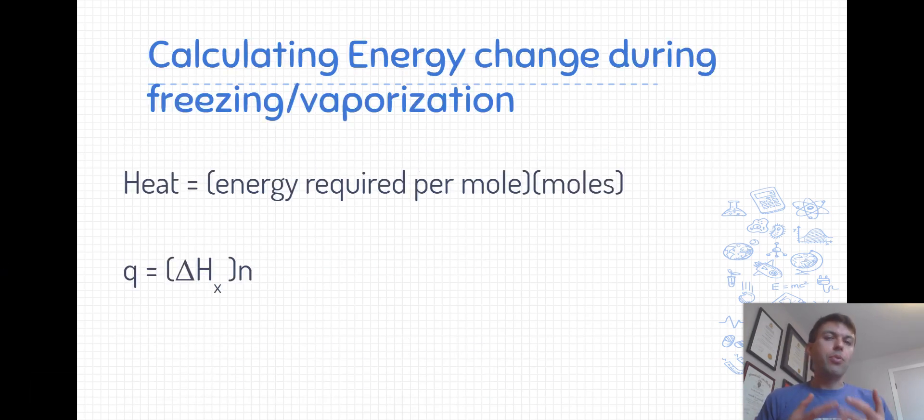A very important calculation in thermochemistry is taking a standardized value like the molar heat of a substance and using that to find out how much heat is going to be released or absorbed when we have some specific amount of that substance.